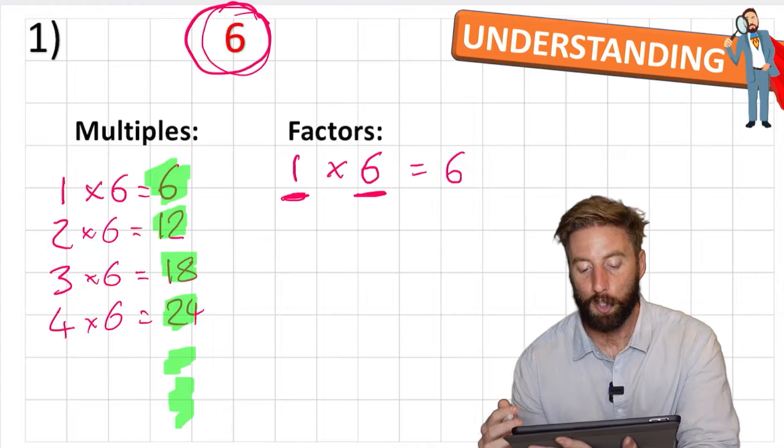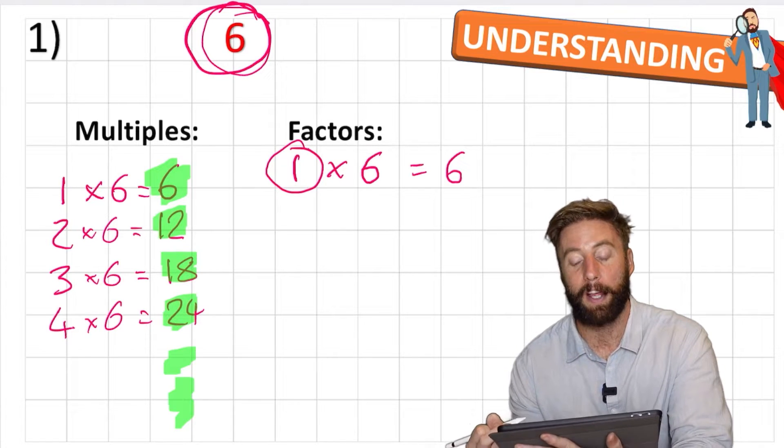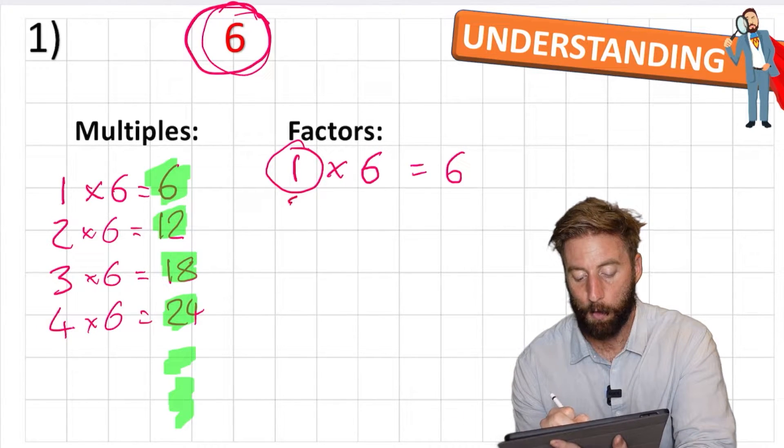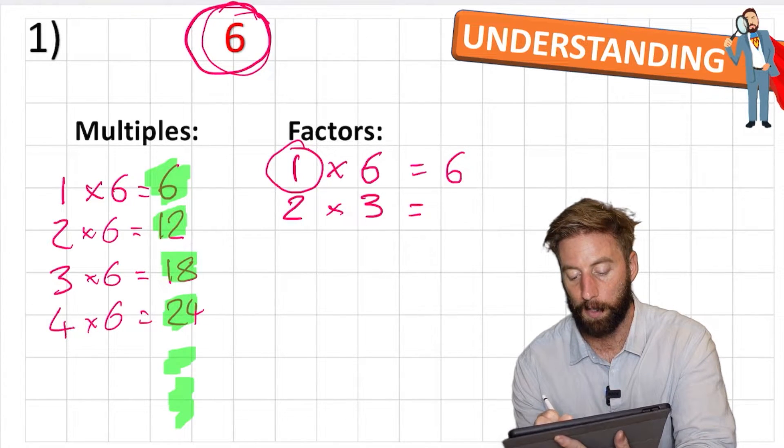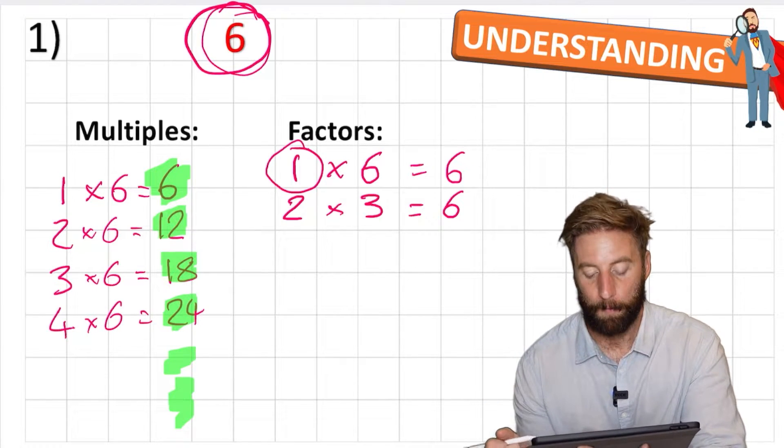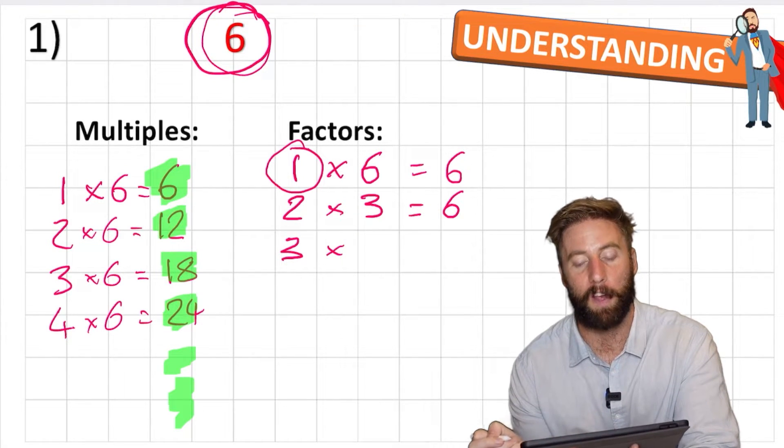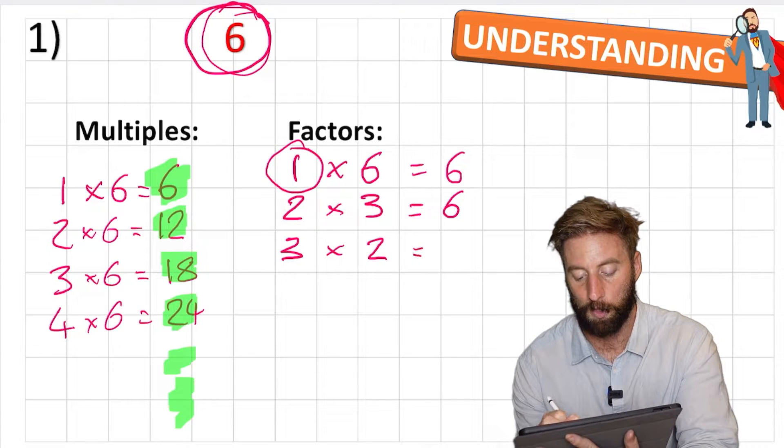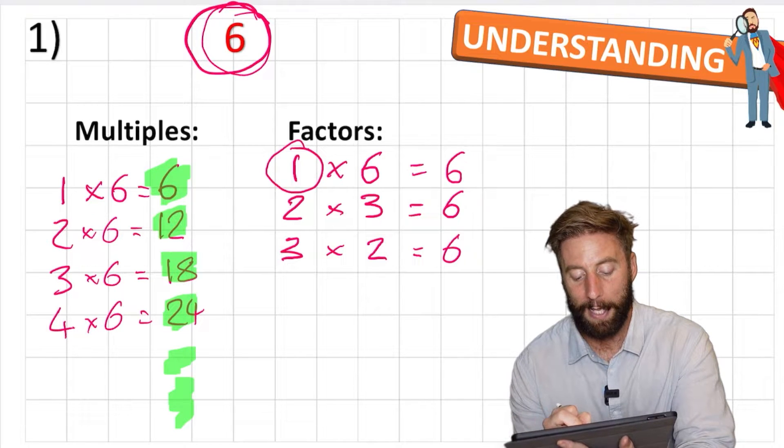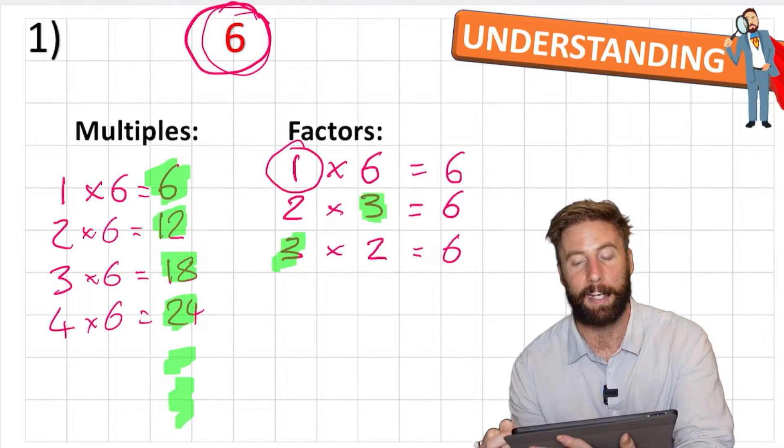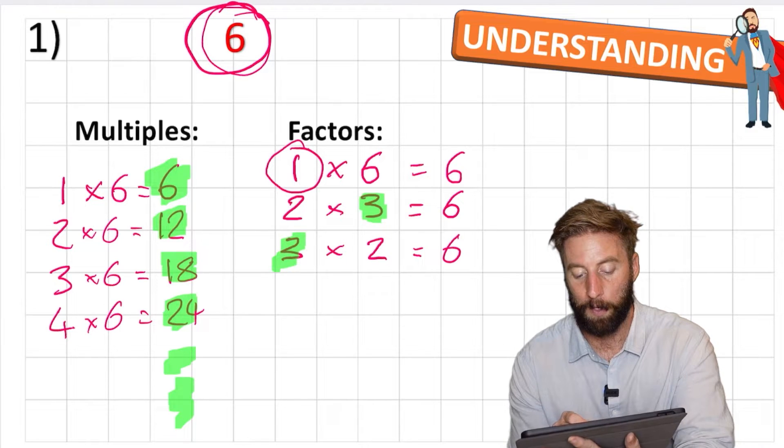So then carrying on the logical sequence, I've just done 1 times 6. Now I want to try and see if I can do 2 times something. So can I multiply 2 by anything to get 6? Well yes, I can multiply it by 3. 2 times 3 is 6. And now here's a little trick. Because look, if I try and do 3 times something, well the only thing I can do is multiply it by 2. And that's still going to equal 6. But I've already used these numbers, these integers, in the previous question. So when we get to a number that we've already used, in this case 3, we know that's as far as we can go with finding our factors. So this one here, we don't need.